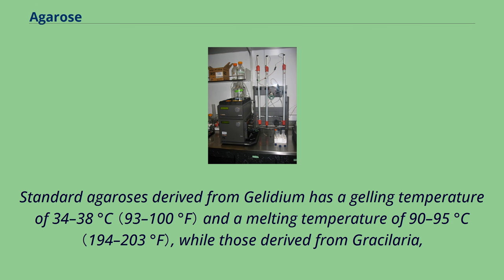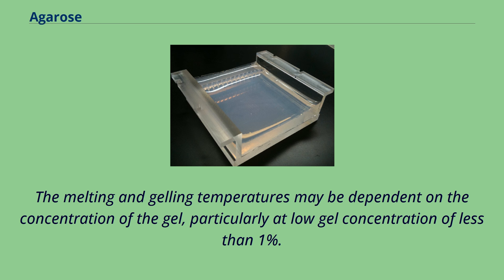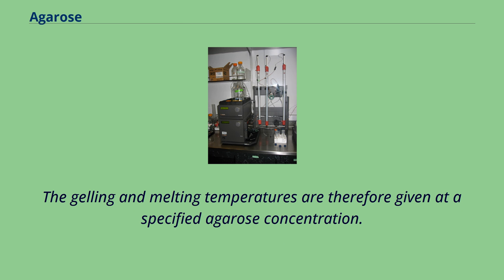Standard agarose derived from Gelidium has a gelling temperature of 34 to 38 degrees Celsius and a melting temperature of 90 to 95 degrees Celsius, while those derived from Gracilaria, due to its higher methoxy substituents, has a gelling temperature of 40 to 52 degrees Celsius and melting temperature of 85 to 90 degrees Celsius. The melting and gelling temperatures may be dependent on the concentration of the gel, particularly at low gel concentration of less than 1%, and are therefore given at a specified agarose concentration.